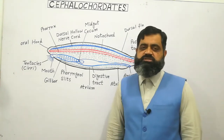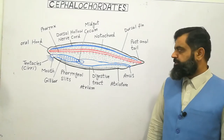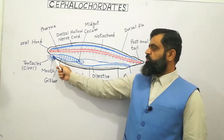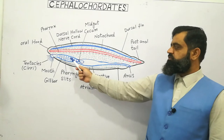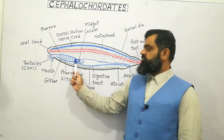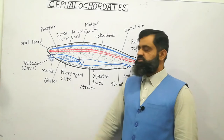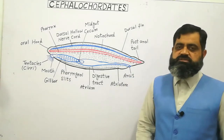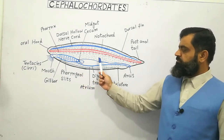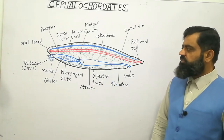Just ventral to the dorsal hollow nervous system there is a rod-like structure known as the notochord, which is the main feature of animals belonging to phylum Chordata. Just below the notochord there is a digestive tract which opens anteriorly at the mouth and posteriorly at the anus. Different regions of the digestive system can be observed. In the anterior region there is a pharynx containing pharyngeal slits and gill bars. There is also an atrium around the pharynx, which opens outside through a pore known as the atriopore.